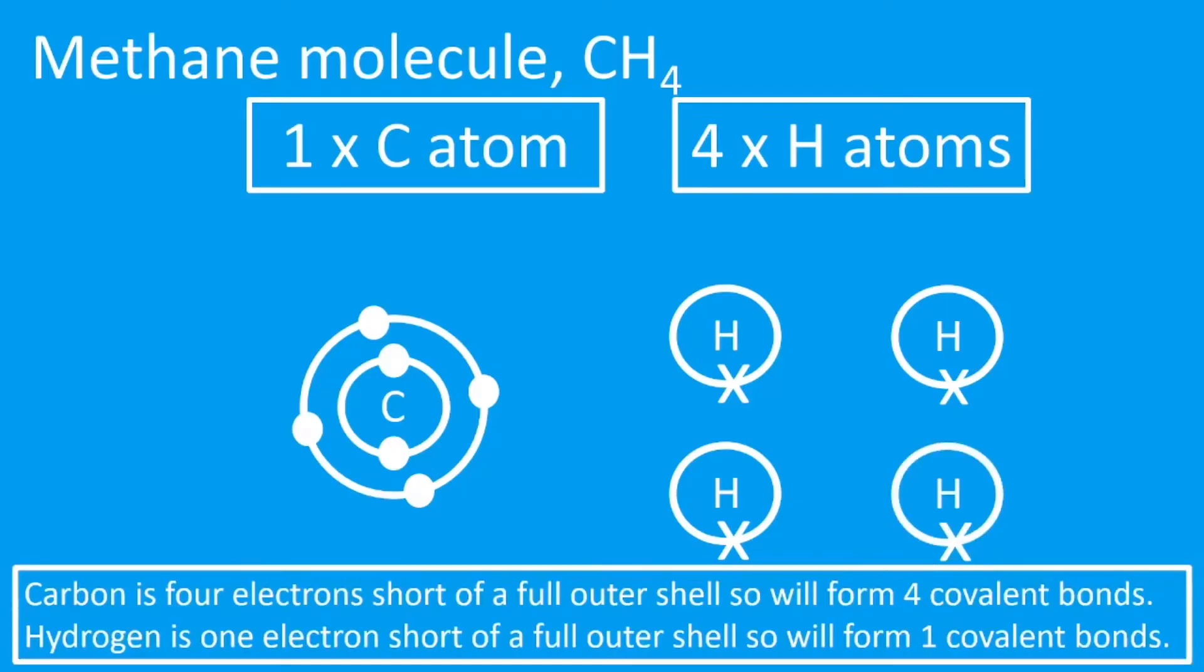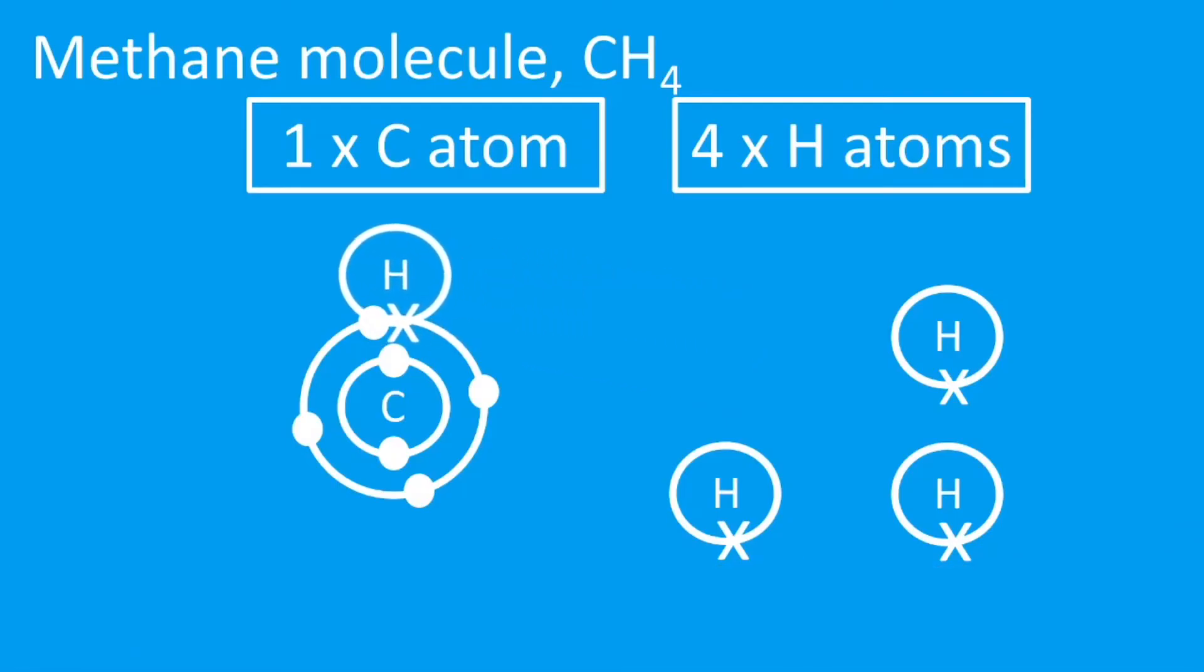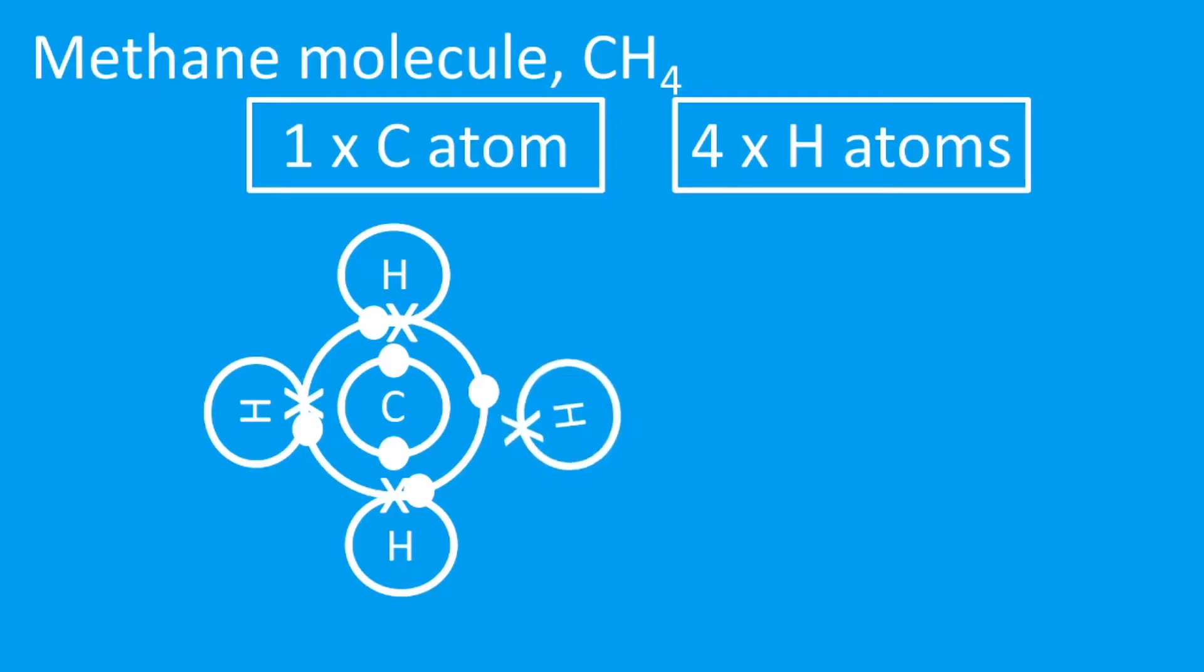Now carbon has four electrons in the outer shell—it's four electrons short of a full outer shell, so it will form four bonds. Hydrogen, because it's only the first shell, is only one electron short, so the hydrogen will form one covalent bond and the carbon will form four. So there's four covalent bonds between carbon and hydrogen here.